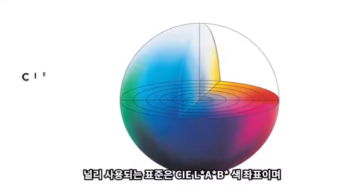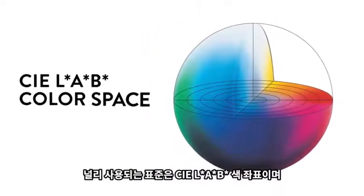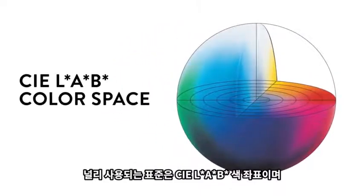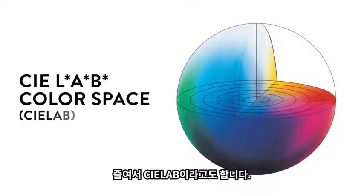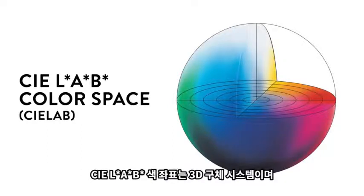The widely used method is the CIE L*, A*, B* color space, or CIE LAB for short. The CIE L*, A*, B* color space is a 3D sphere system that uses coordinates to express color.